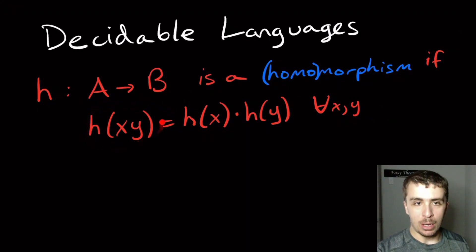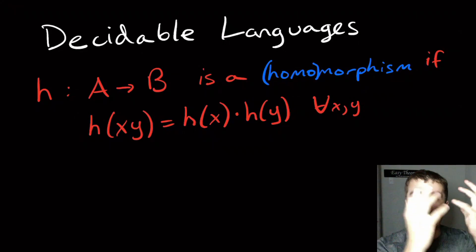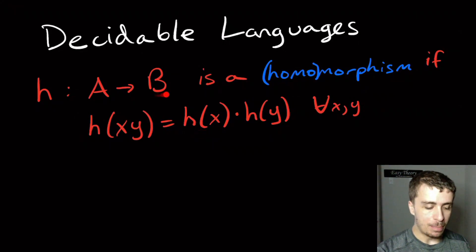Then it's a homomorphism if it's the property that we can separate it out into individual characters if we want it to, or individual parts at the very least. So we have H apply to individually the X and the Y, and then we take that result, H of X is in B, H of Y is also in B, and we make the concatenation of those.